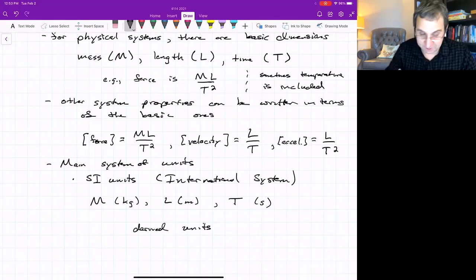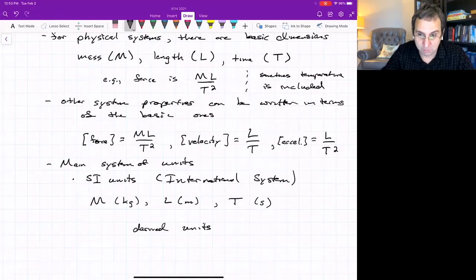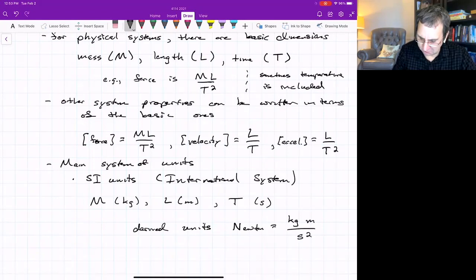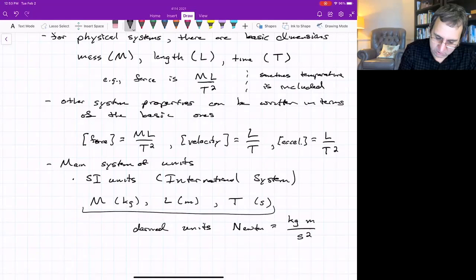All the other units are derived from those. Derived units that we attach people's names to sometimes, like newtons. One newton equals one kilogram meter per second squared. It's a derived unit from these basic three, which match these basic three dimensions.